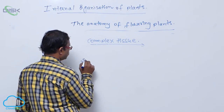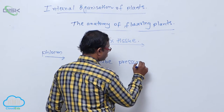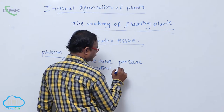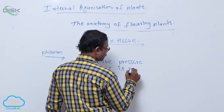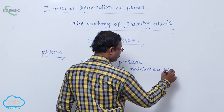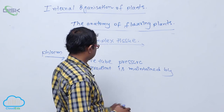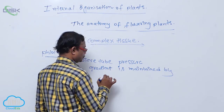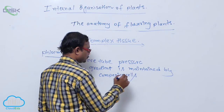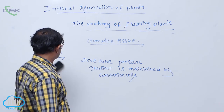Sieve tube pressure gradient is maintained by companion cells.